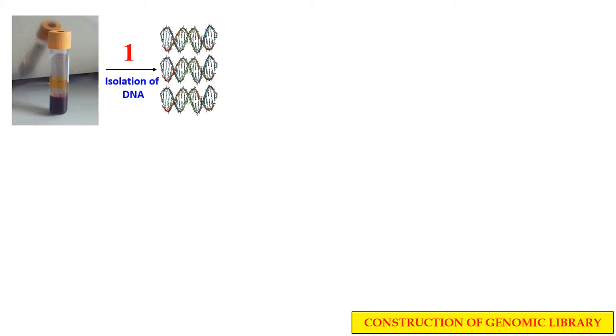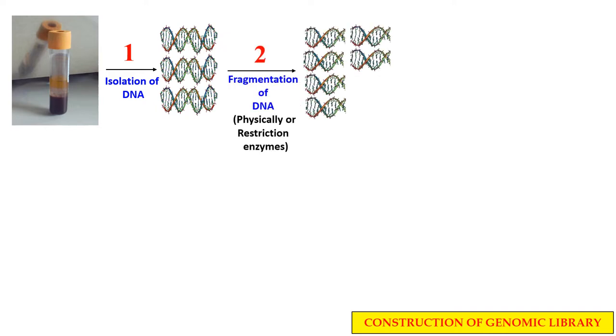Now, how will you construct a genomic library? For this, first of all you definitely need the genomic DNA. You can isolate the genomic DNA from any tissue — here I am taking an example of blood. So in the first step we isolate the genomic DNA from the blood. In the second step, this genomic DNA is fragmented by the help of restriction enzymes. This total genomic DNA is fragmented into smaller fragments. You may either physically cause the fragmentation or use restriction enzymes — generally we use restriction enzymes.